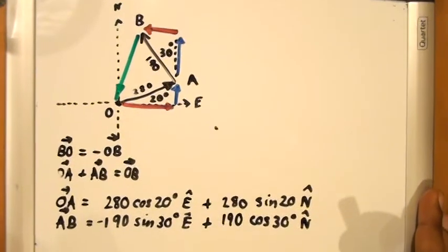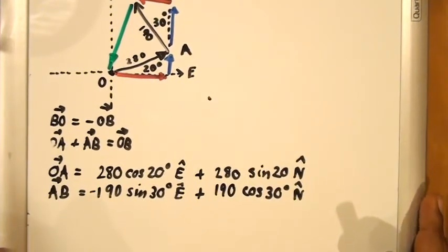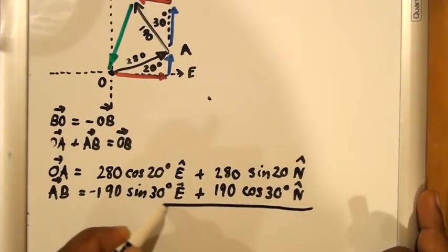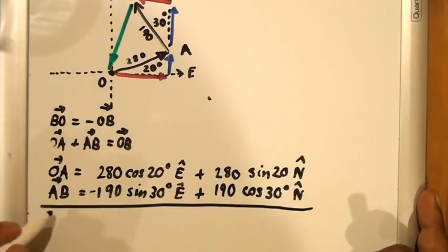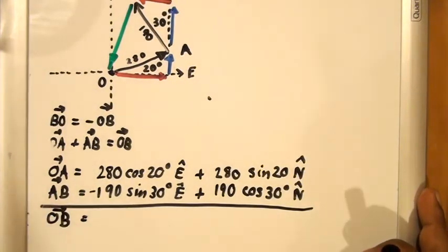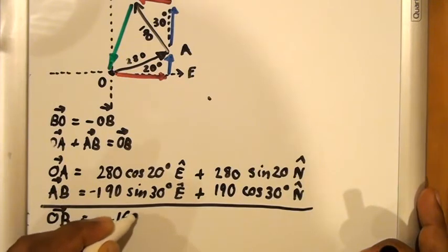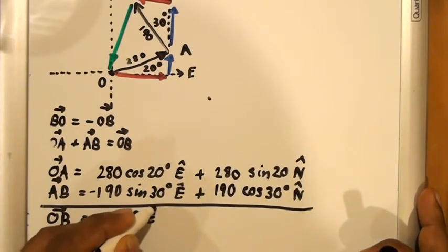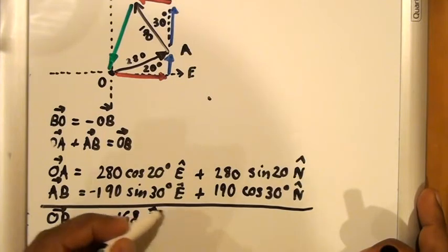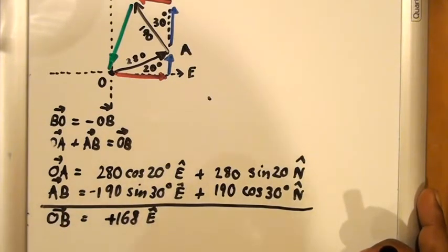When we add these two together, we will end up with the resultant, which of course is O to B. When we add 280 cos 20 and subtract from it 190 sin 30, we get 168. It's a positive number. And when we add these two together, we get 260.